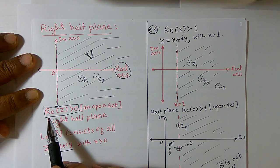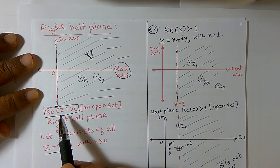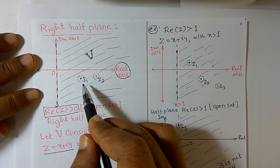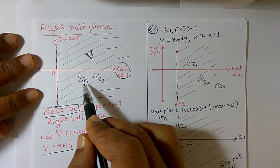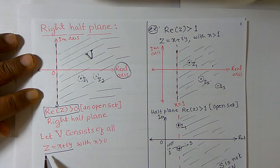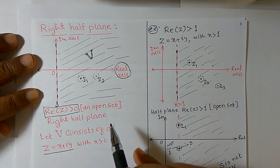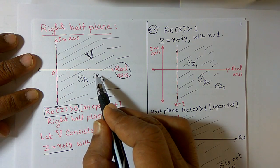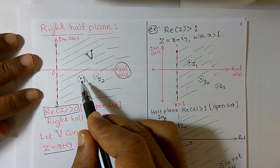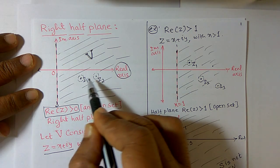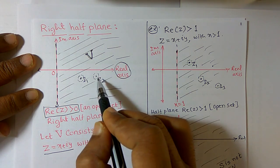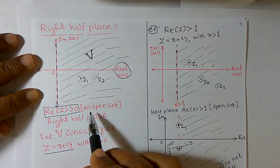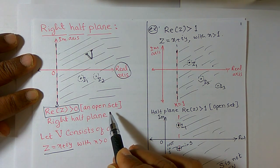One point is clear. Another point is: when we say that real part of z is greater than 0 is an open set, it is very clear. You can consider complex numbers z1 and z2 of the form z = x + iy with x greater than 0. You can construct an open disk around z1 and around z2. These open disks contain some points, and these points all belong to the set V. That is why we say real part of z greater than 0 is an open set.